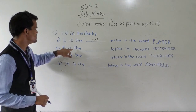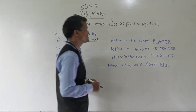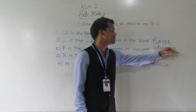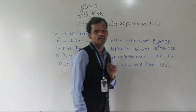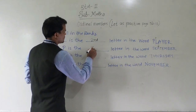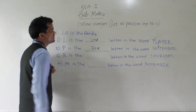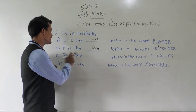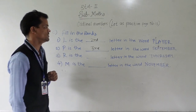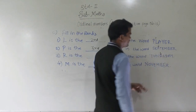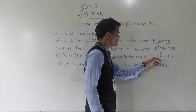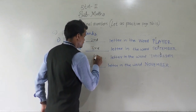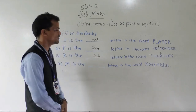Second: P is the blank letter in the word September. Where is the P? Counting: first, second, third — P is the third letter in the word September. Next: R is the third letter in the word Thursday. Where is the R? First, second, third, fourth — R is the fourth letter of the word Thursday.